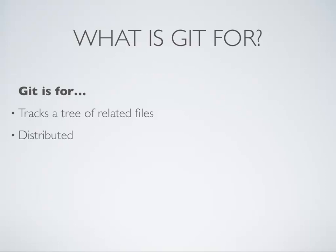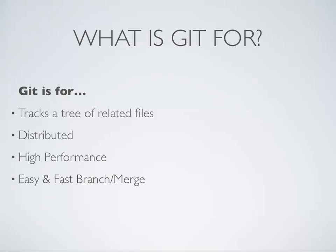Git tracks a tree of files over time — that's important. It's a tree of files that are related to one another in a project. Git is distributed, which means — and there's a little misunderstanding about this — it doesn't mean that there's no central server. Anyone who's used GitHub has used a central server. It means that your copy of the repository is complete unto itself. You can do everything: look back through history, work, add commits — all complete unto itself.